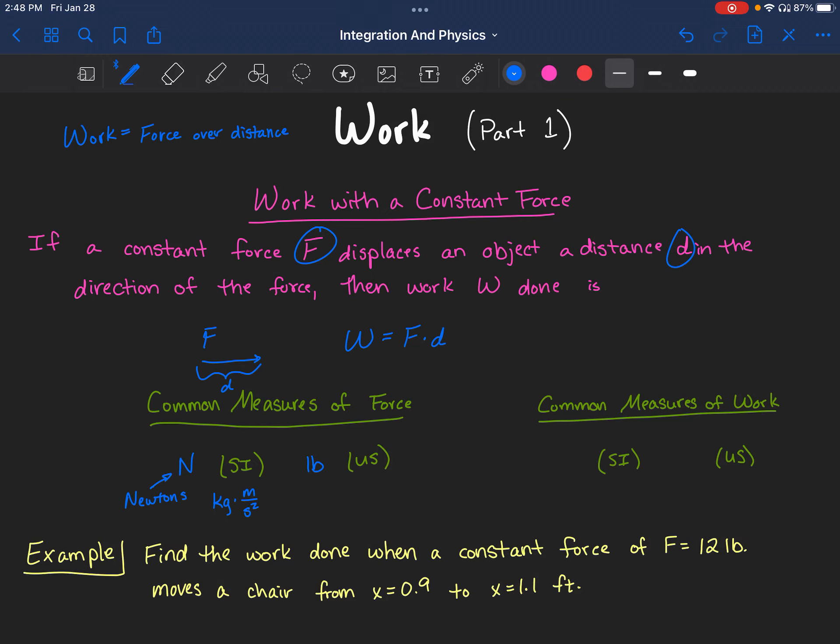Another common thing we need to look for is common measures of work. The most common one in SI units is joules, represented by a capital J. Since it's force times distance, it's technically newtons times meters, which can also be written as kilograms times square meters per second per second. But joules is typically the way we write it.